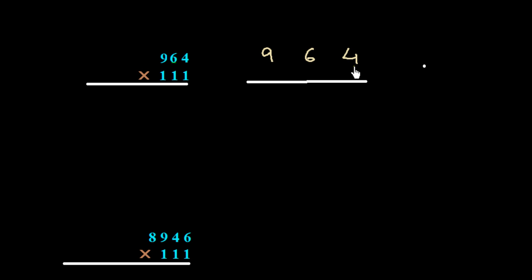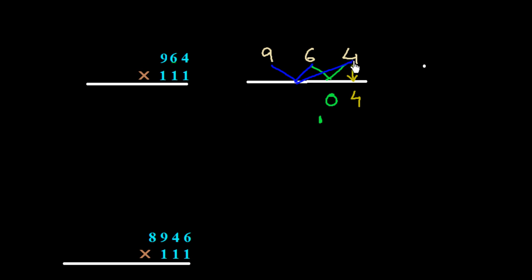First we write down 4 here. Then the sum of two digits: 6 plus 4 is 10, so we write 0 and carry 1. Then we add three numbers: 9 plus 6 plus 4 is 19, plus the carried 1 is 20. We write 0 and carry 2.